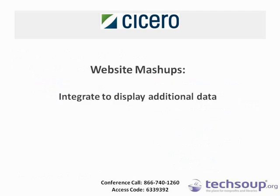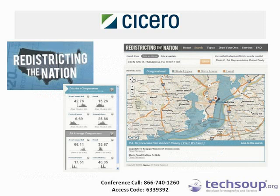A third way to use the API is to create website mashups, using multiple sources of information in one application. Internally, we created a website called Redistricting the Nation. We do a lot of work around redistricting, and because of the Cicero API we have great spatial data and legislative districts. We've been able to use those districts to do further analysis around redistricting — how compact a district is, how gerrymandered it is. We use the Cicero API to provide a lookup tool, and users can then do further analysis using another in-house dataset to analyze a district and see how compact it is and learn about the actual boundaries of the district they live in.